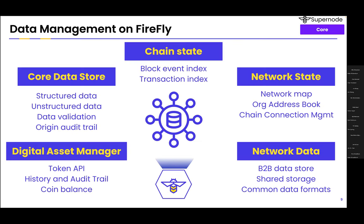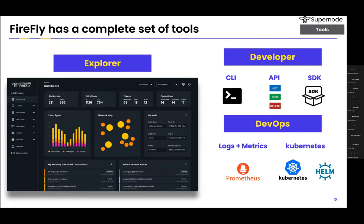Firefly stores data in a few different places. It has a database where it stores network and chain state. It also works with a shared storage system — the out-of-the-box implementation is IPFS. And it has a private data exchange as well. Firefly has a lot of tools with it. Here's another screenshot of the Explorer from the dashboard. There's the CLI, the API, and the SDK. It has a lot of tools and they're really great — they make using it easy and an enjoyable experience for developers.